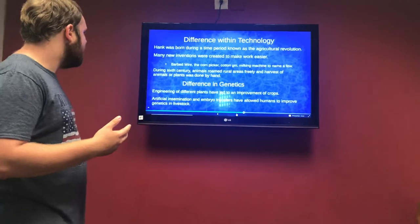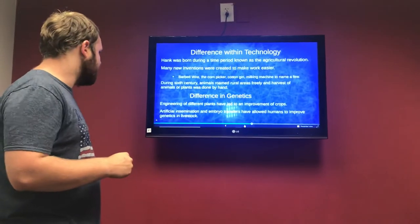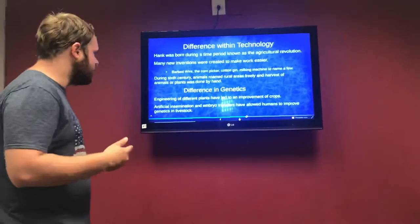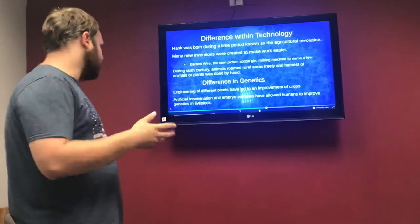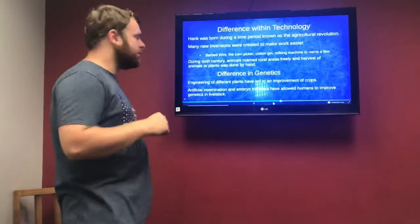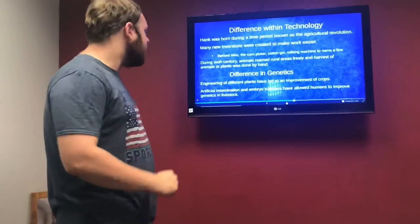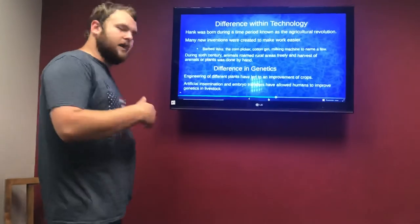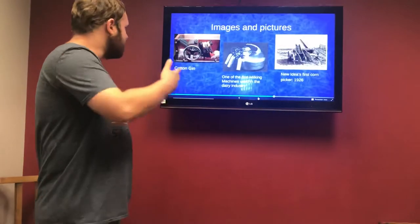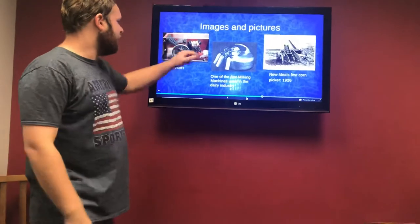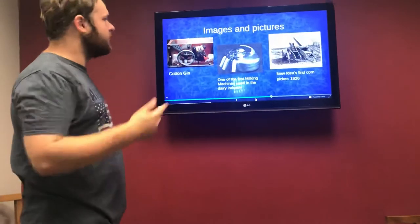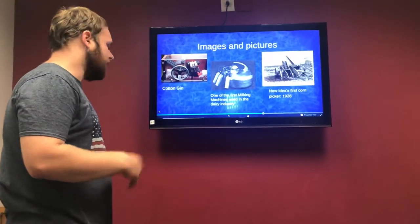Differences in genetics: during Hank's time period, especially engineering of different plants, led to an improvement of crops. Artificial insemination, embryo transfers, that's something else that allowed humans to improve genetics within livestock and crops starting really in the 20th century, right in the later days of Mark Twain. Here are some images: the cotton gin, one of the first milking machines used in the dairy industry, and the first corn picker of 1926.